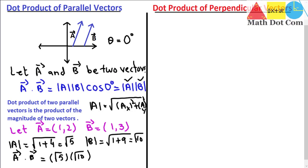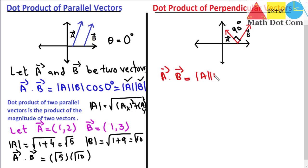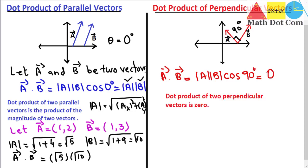Now we move to the dot product of perpendicular vectors. Vectors a and b are perpendicular to each other, meaning the angle between them is 90 degrees. So a dot b equals the magnitude of a times the magnitude of b times cos of 90 degrees. Since cos(90°) = 0, the entire expression equals zero. Therefore, the dot product of two perpendicular vectors will always be zero.